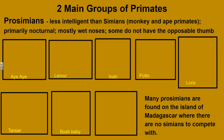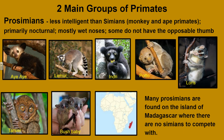Let's take a closer look at those two main groups. The prosimians are less intelligent than the simians. The simians would include the monkeys and the apes. The prosimians would include things such as the aye-aye, the lemur, and the indri. These are primarily nocturnal, meaning they're more active at night. They have mostly wet noses, which allows them to be a little more sensitive to smell than the simians. And some of these do not have opposable thumbs — specifically the tarsier does not have opposable thumbs.